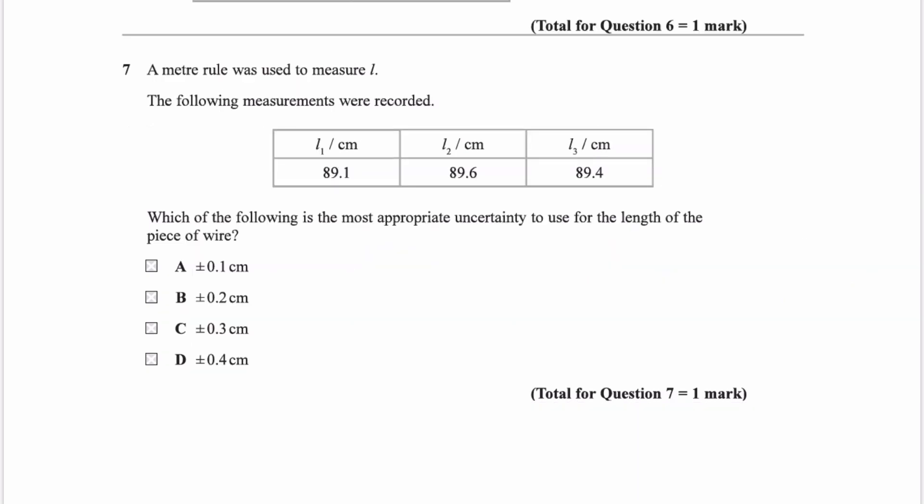For question 7, we have three different lengths measured with a metre ruler. We're trying to work out the uncertainty. When you have recorded a bunch of different readings and you're trying to find an average and work out an uncertainty, you find the range — the biggest minus the smallest value — and then divide that by 2. Before finding the range, you want to take out any anomalies. In this case there aren't any anomalies, so none of these values are significantly different from any others.